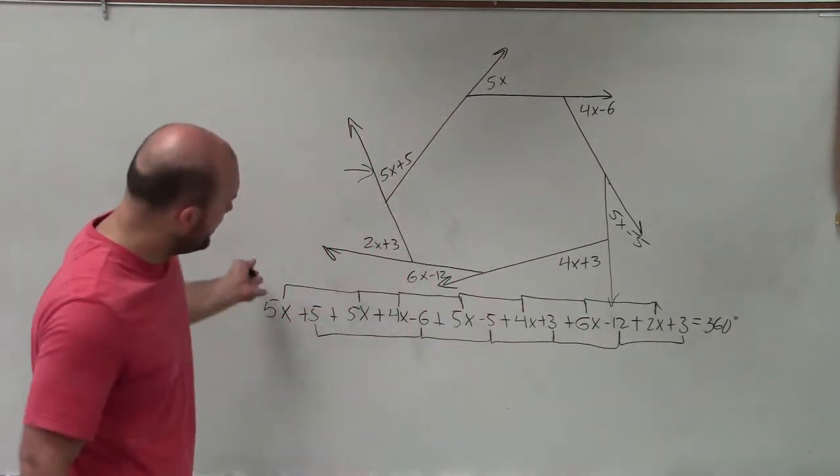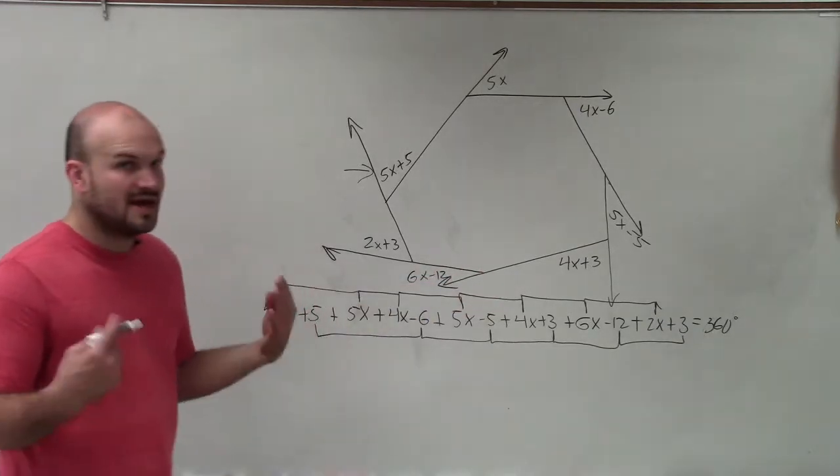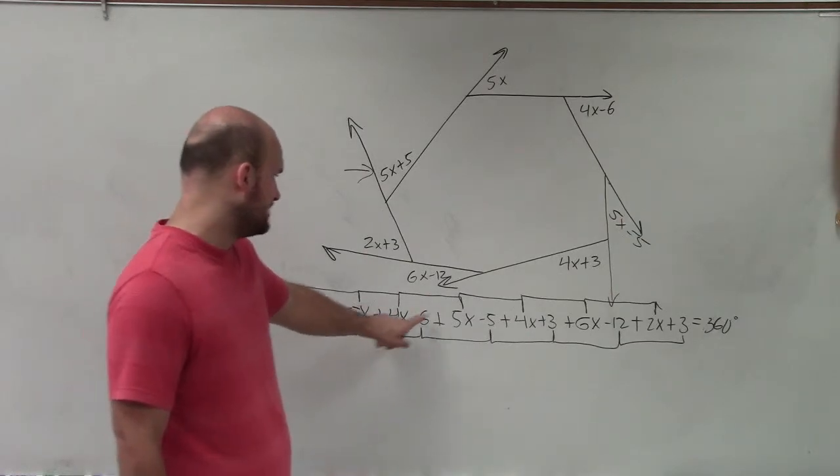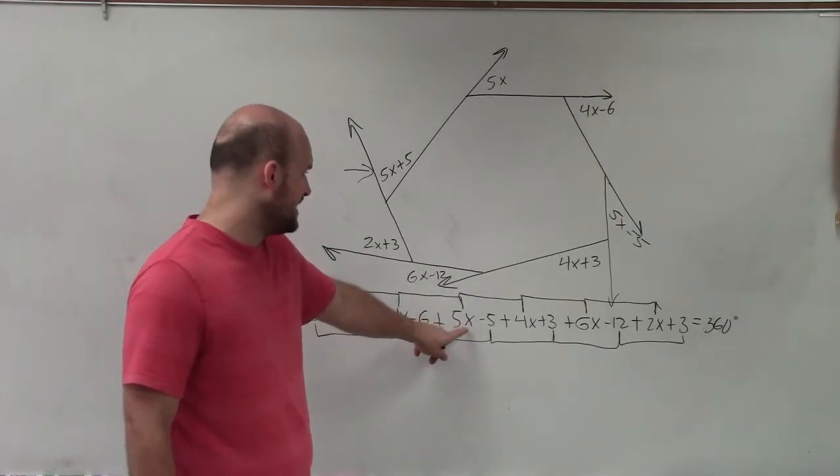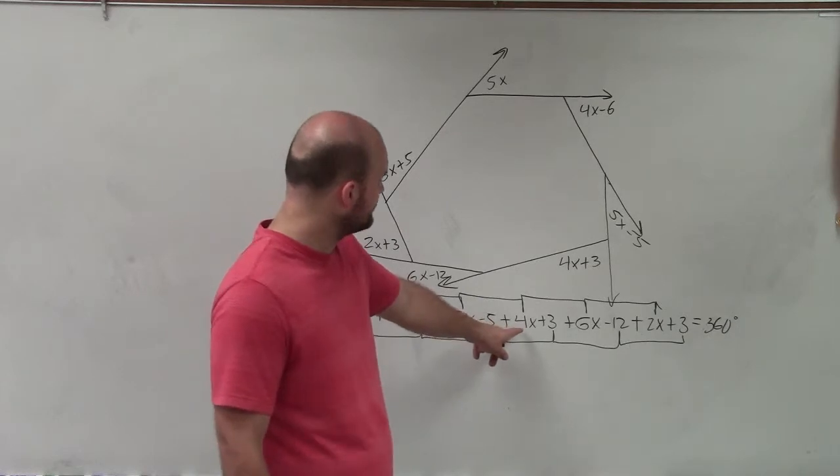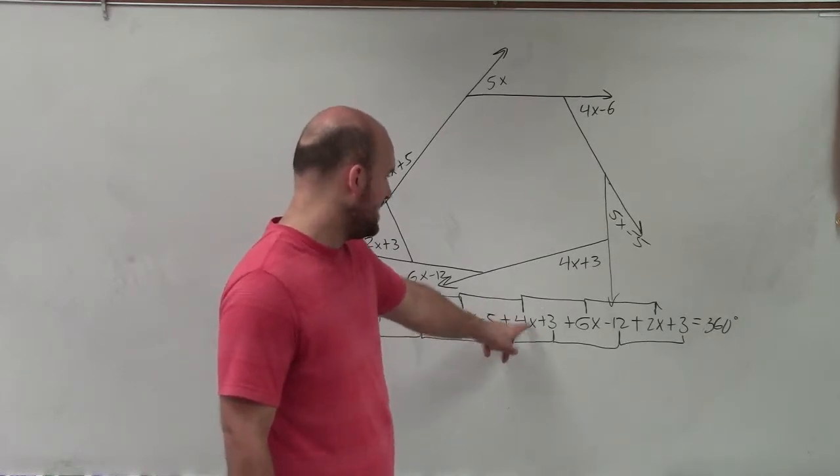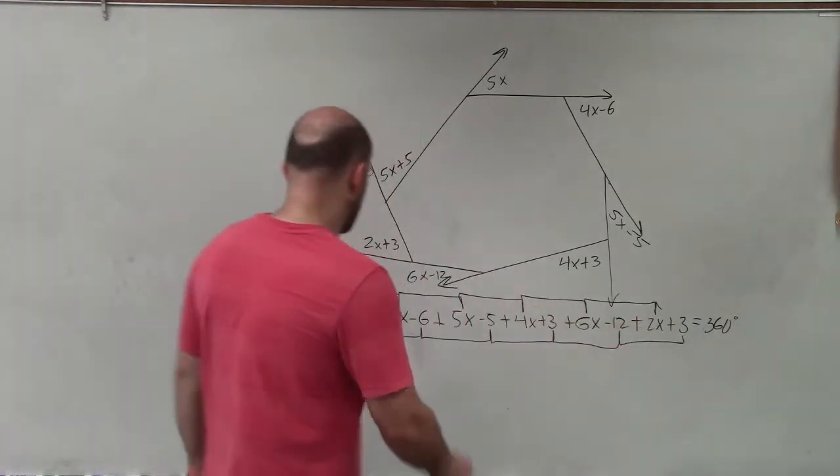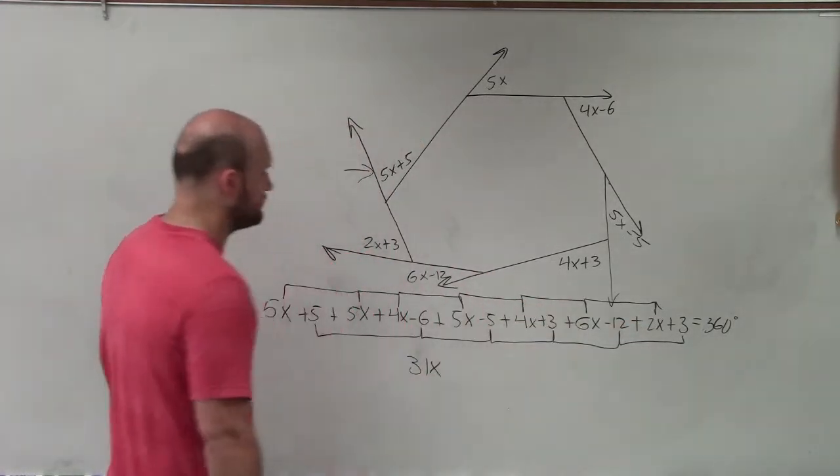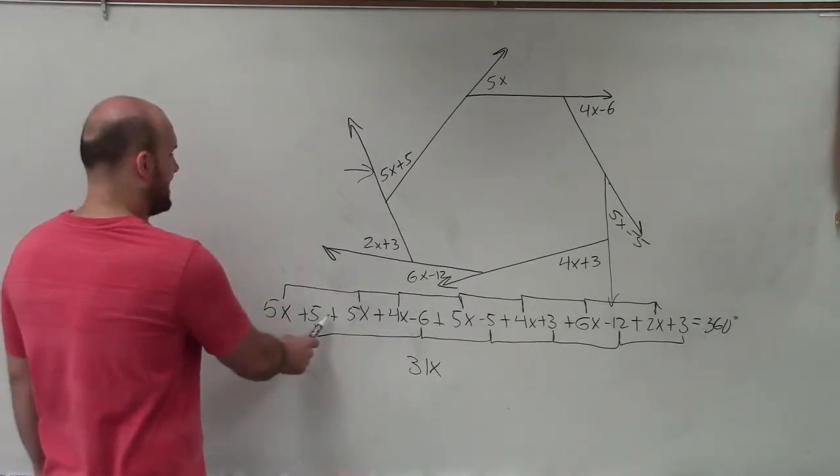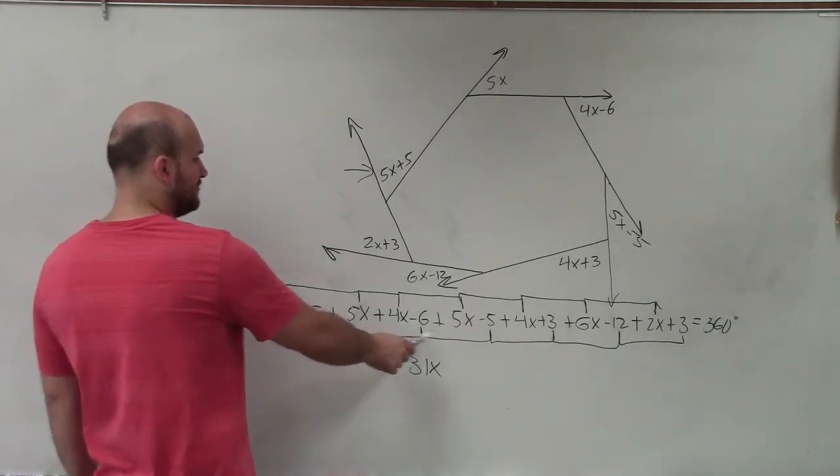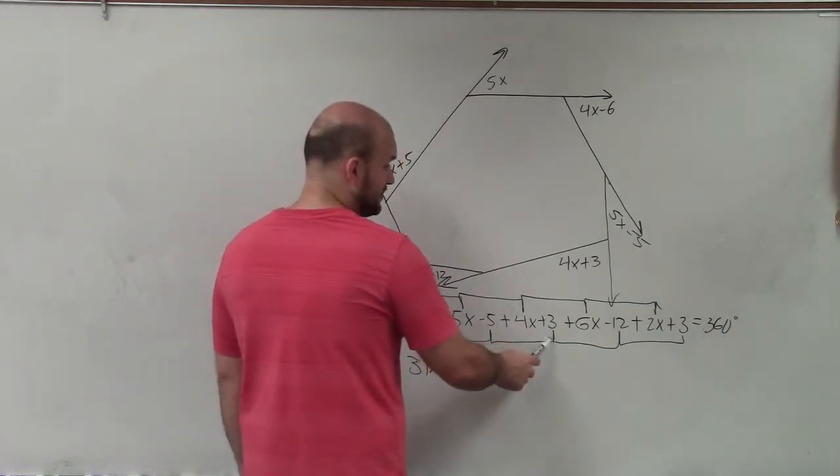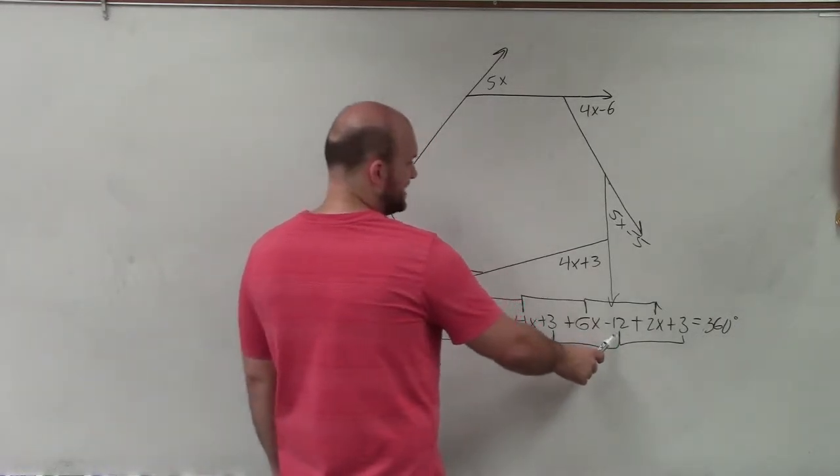So I'm going to say it out loud. I'll do the numbers up top first. So I have 5x plus 5x is 10x, plus 4x is 14x, plus another 5x is 19x, plus another 4x is 23x. This would be 29x and that would be 31x. So by combining all my x's I have 31x's. And then I do 5 plus negative 6 is negative 1, plus another negative 5 is negative 6, plus 3 is now negative 3, minus 12 is going to be negative 15.